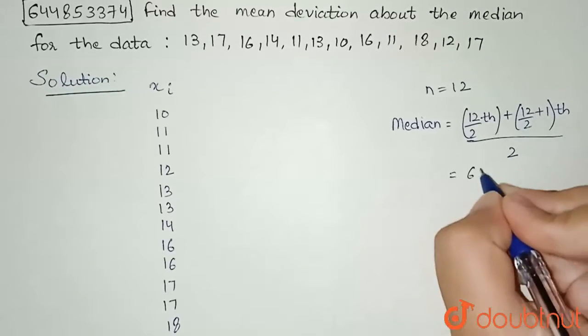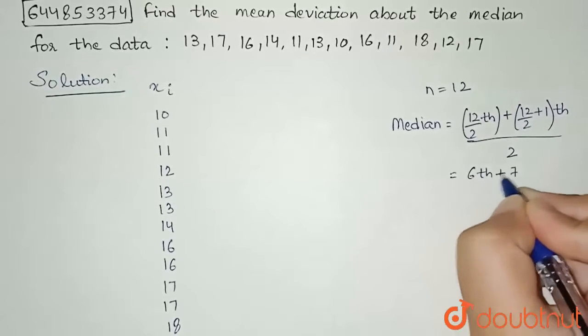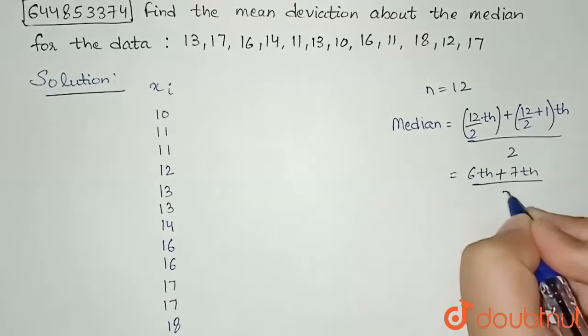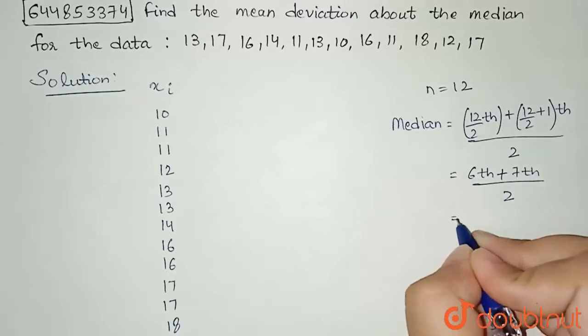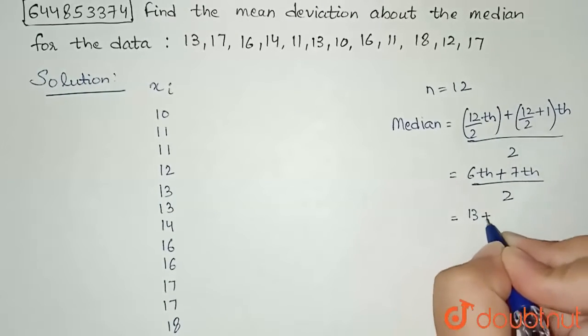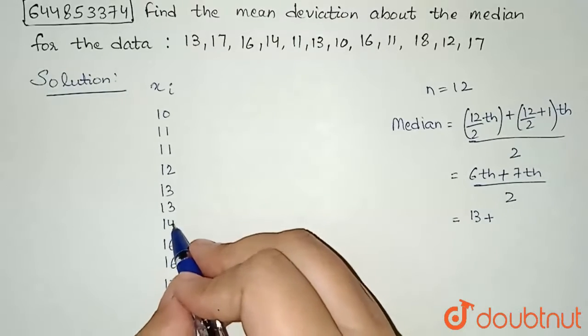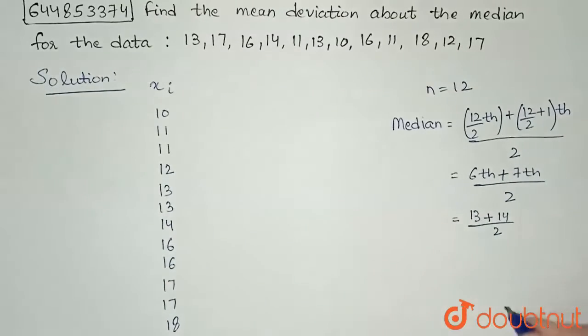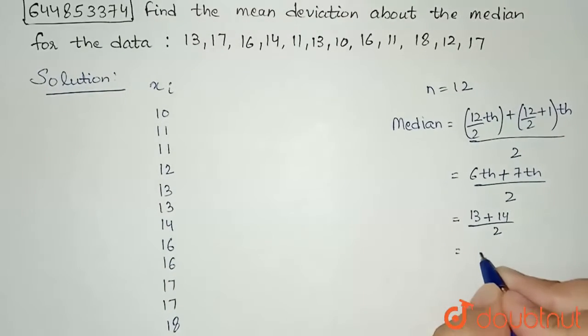My 6th term is 13 and 7th term is 14. So 13 plus 14 divided by 2, and this comes out to be 13.5. So I have got my median as 13.5.